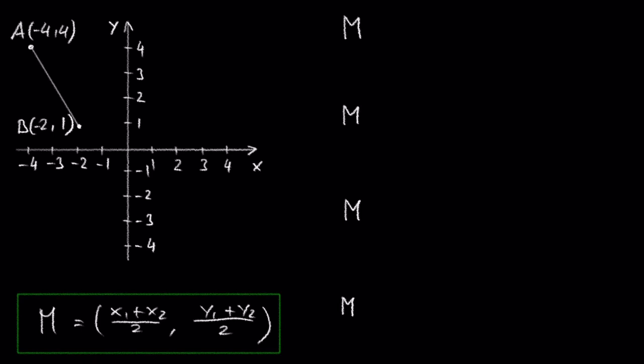How can we find the midpoint of these two points? To get the x-coordinate of the midpoint, we have to divide the sum of the x-coordinates of point A and point B by 2. We get negative 4 plus negative 2 is negative 6 and negative 6 divided by 2 is negative 3.